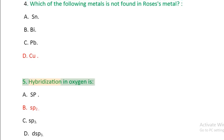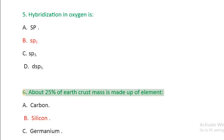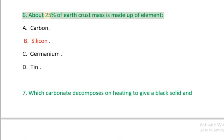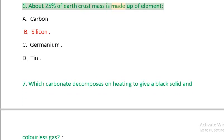Question 5: Hybridization in oxygen is: A. SP, B. sp₂, C. sp₃, D. dsp₃.